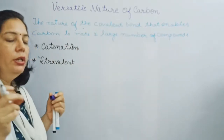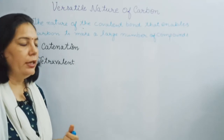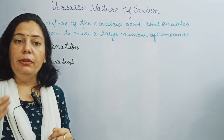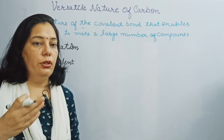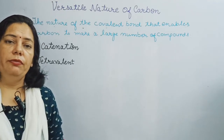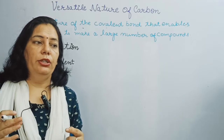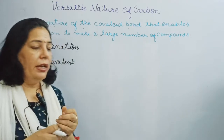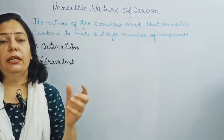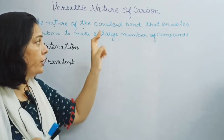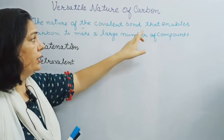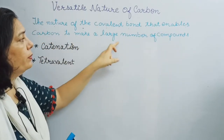Carbon always forms covalent compounds. The reason is that carbon's valency is 4 — it can neither lose 4 electrons nor gain 4 electrons, as neither situation is energetically favorable. Therefore, carbon always shares electrons, and sharing of electrons forms a covalent bond. It is the nature of this covalent bond that enables carbon to make a large number of compounds.